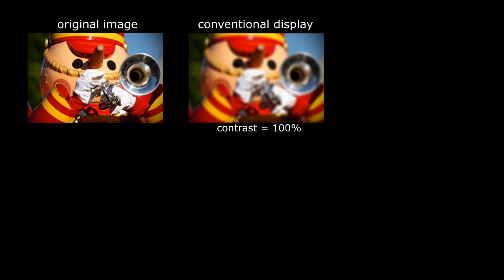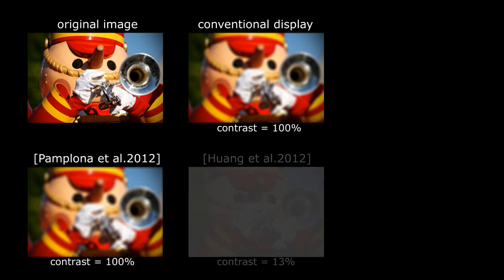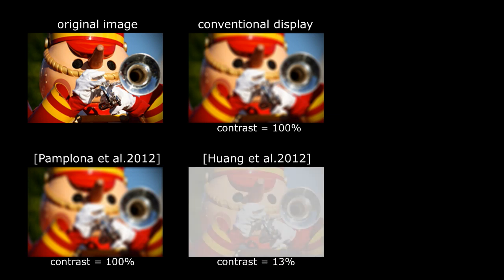First, we will show some simulated results. An out-of-focus image on a conventional display is blurred. Pamplona et al. only generated a slightly better image with a constrained hardware requirement. Earlier work, multi-layer display produces a much sharper image, but the contrast is low.